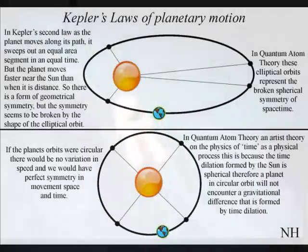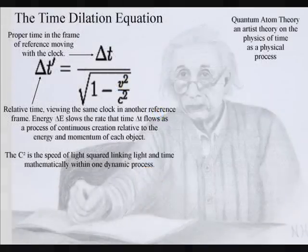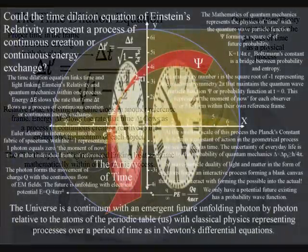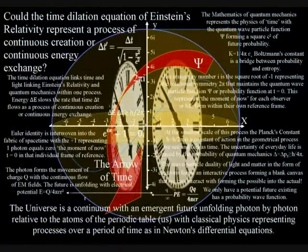If the planets orbits were circular there would be no variation in speed and we would have perfect symmetry in space and time. This is because the time dilation of Einstein's relativity that is formed by the sun is spherical. Therefore a planet in circular orbit would not encounter a gravitational difference and would have constant speed.